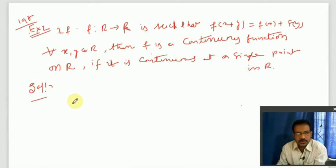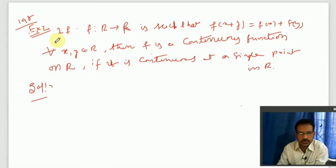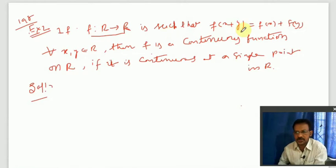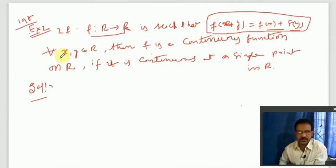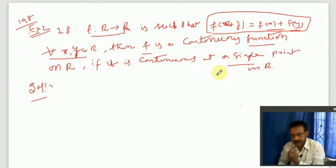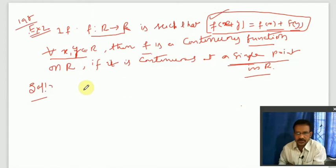Hello students. In this class we discuss continuity — textbook page number 198, example 2. If f is a function defined from ℝ to ℝ such that f(x+y) = f(x) + f(y), this condition is satisfied for all x, y belonging to ℝ. If the function is continuous at a single point, then f is said to be continuous on ℝ. We will prove this.